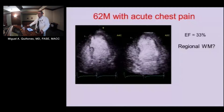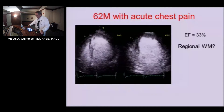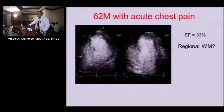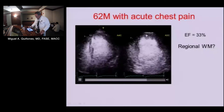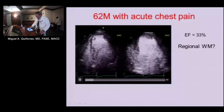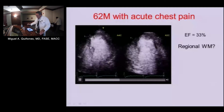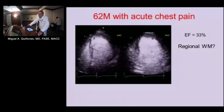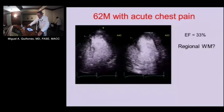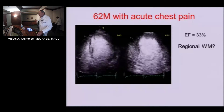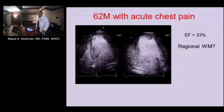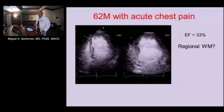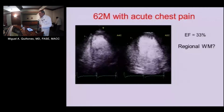Is this totally global or is there any regional dysfunction? It looks like maybe at the apex things are not doing much, and maybe at the very distal septum. Could this be a non-ischemic cardiomyopathy? Yes. Could this be a patient with ischemic cardiomyopathy with the apex being worse than everything else? Yes. So the presence of regional wall motion abnormality, although it increases the statistical odds of CAD, is not a slam dunk. Likewise, the absence of regional wall motion abnormality does not exclude CAD.